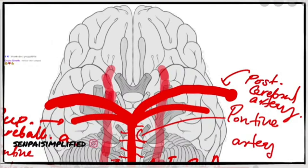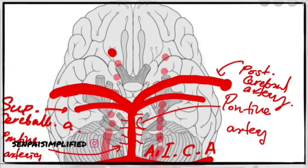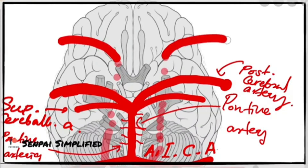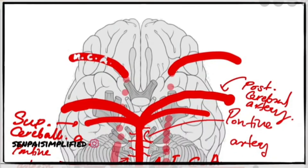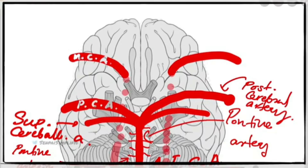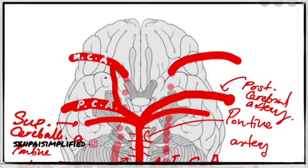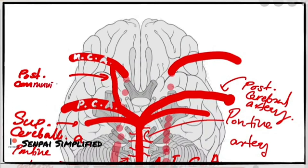Around here the internal carotid gives a bunch of branches. The main one is the middle cerebral artery, which supplies a majority of the lateral aspect of the cerebrum — most of the cerebral cortex is supplied by the middle cerebral artery. There is also a communicating artery that connects the middle cerebral artery and the posterior cerebral artery, called the posterior communicating artery, and we have one on each side.